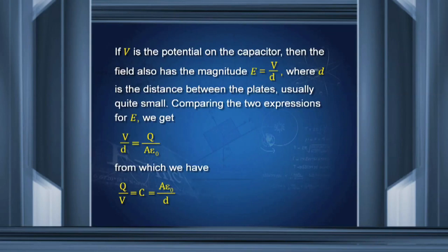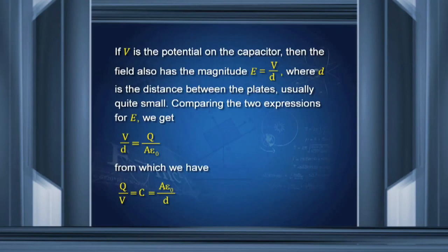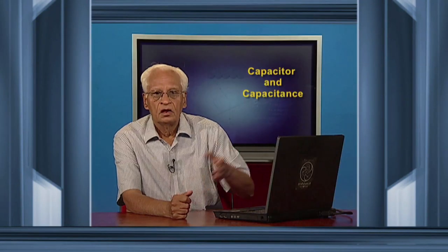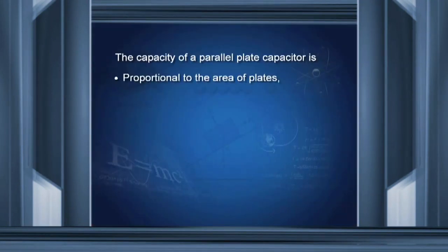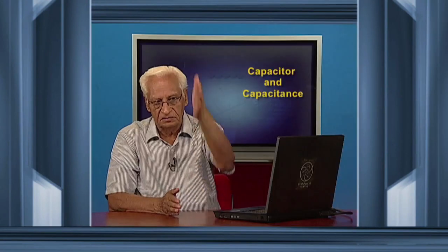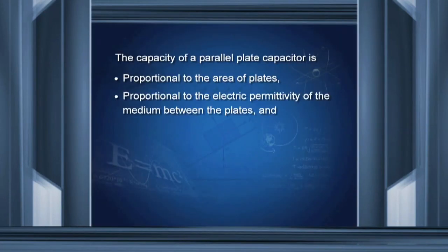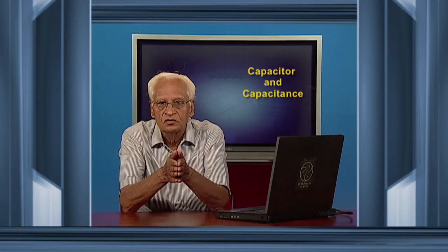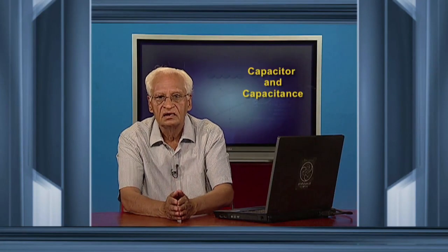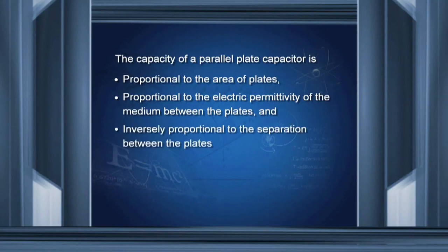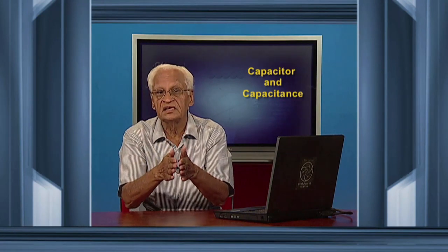So A epsilon-0 over D is the expression for the capacitance of a parallel plate capacitor, where D is the distance between the plates, A is the area of each plate, and epsilon-0 is the permittivity of vacuum. The capacitance is proportional to the area of the plate, proportional to the electric permittivity of the medium between the plates, and inversely proportional to the separation between the plates — that is, if the plates are nearer, the capacitance is larger.